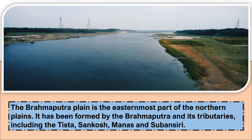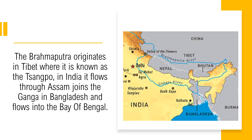The Brahmaputra Plain is in the easternmost part of the Northern Plains. It has been formed by the Brahmaputra and its tributaries, which include the Tista, the Sankosh, Manas, and Subhansari. The Brahmaputra originates in Tibet, flows towards the east, and there the river is known as Sangpo. It enters India through Arunachal Pradesh.